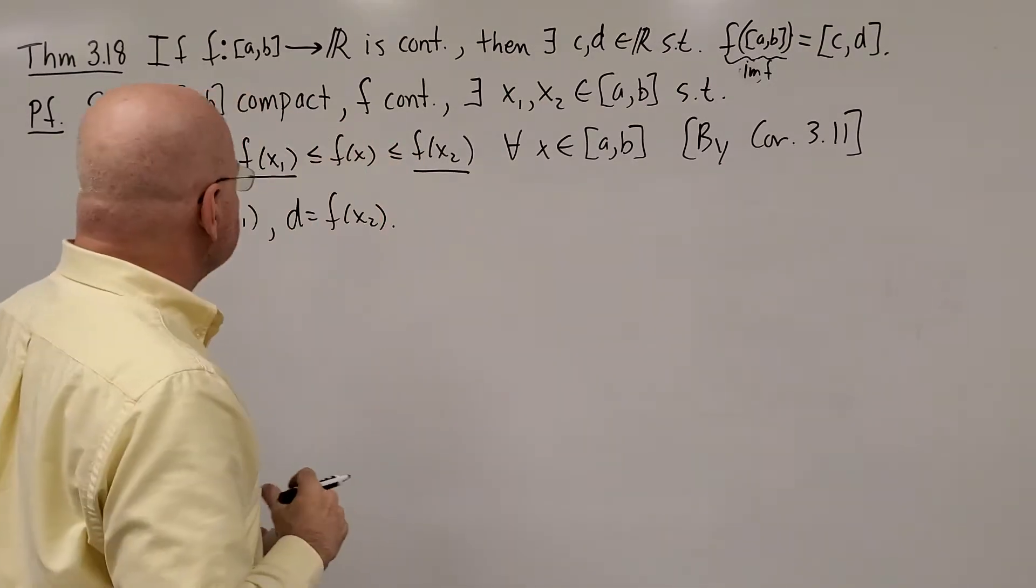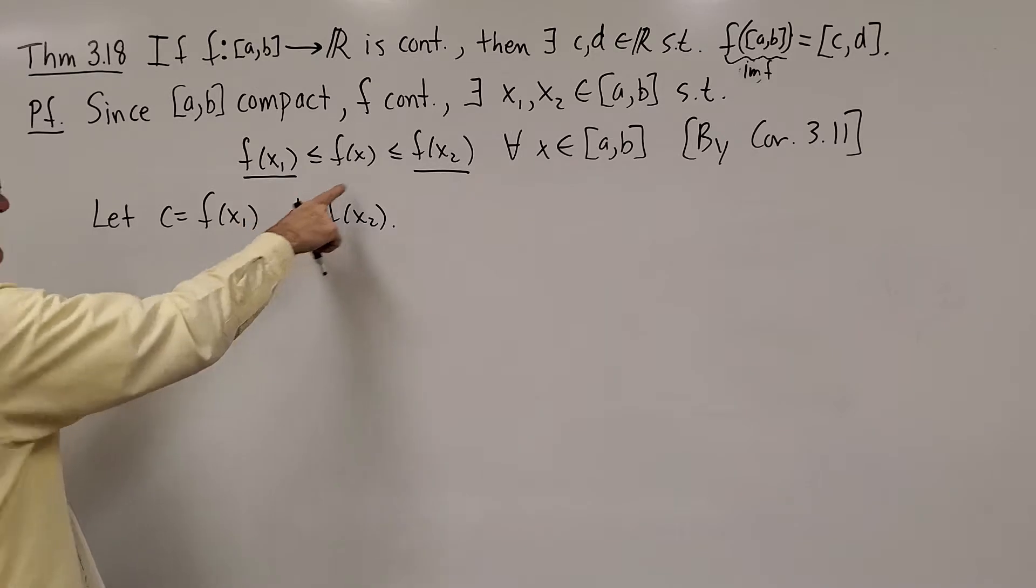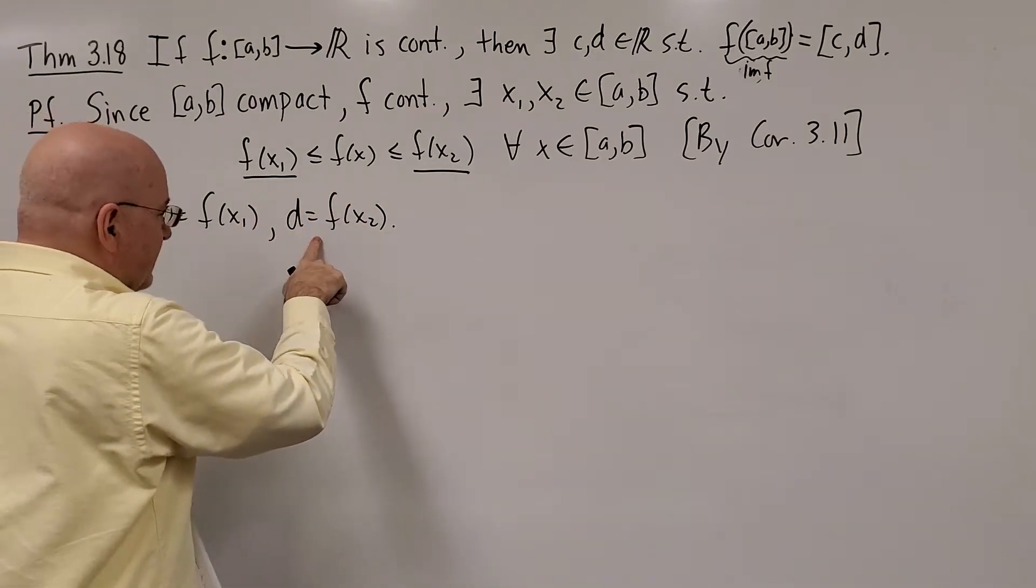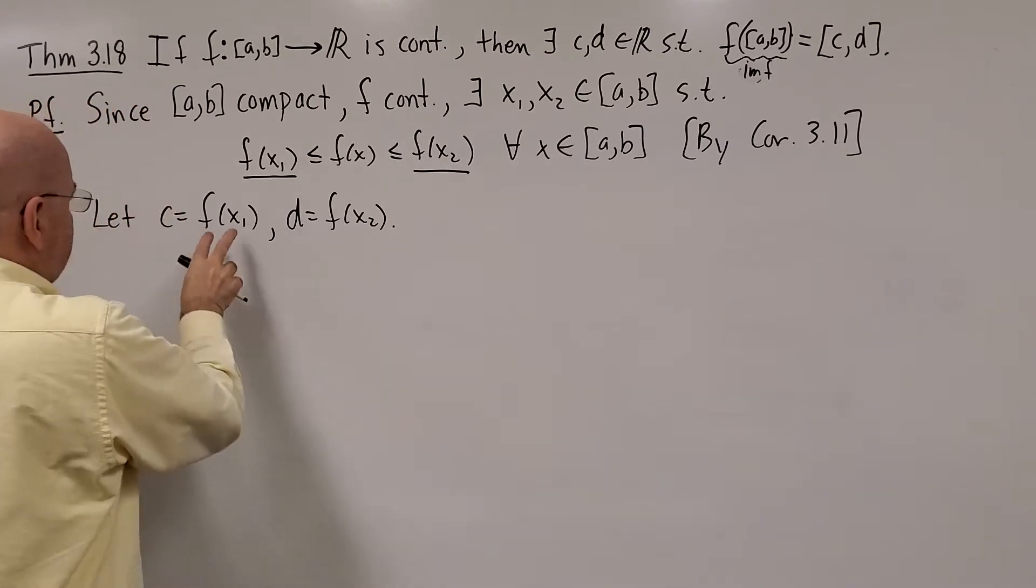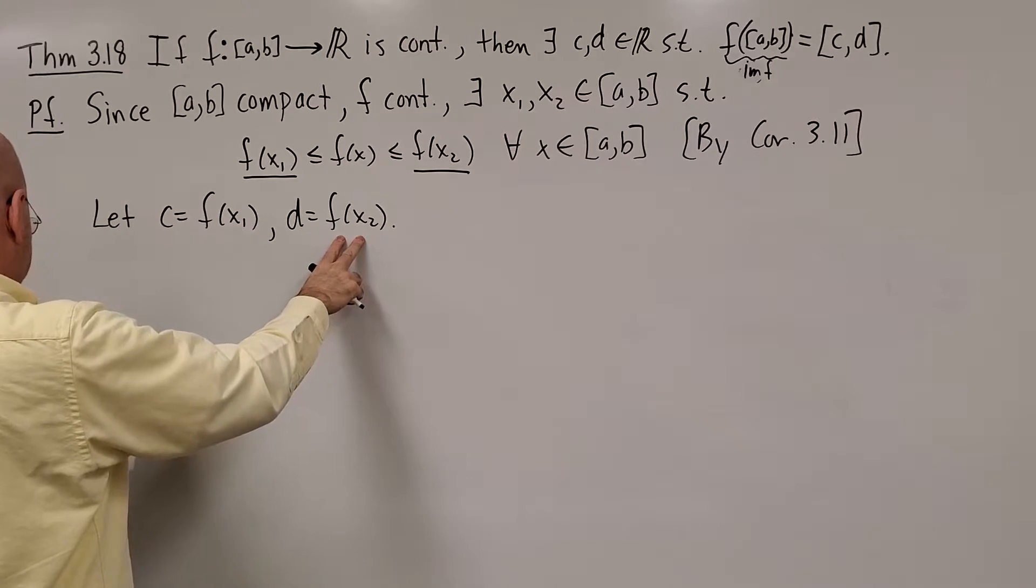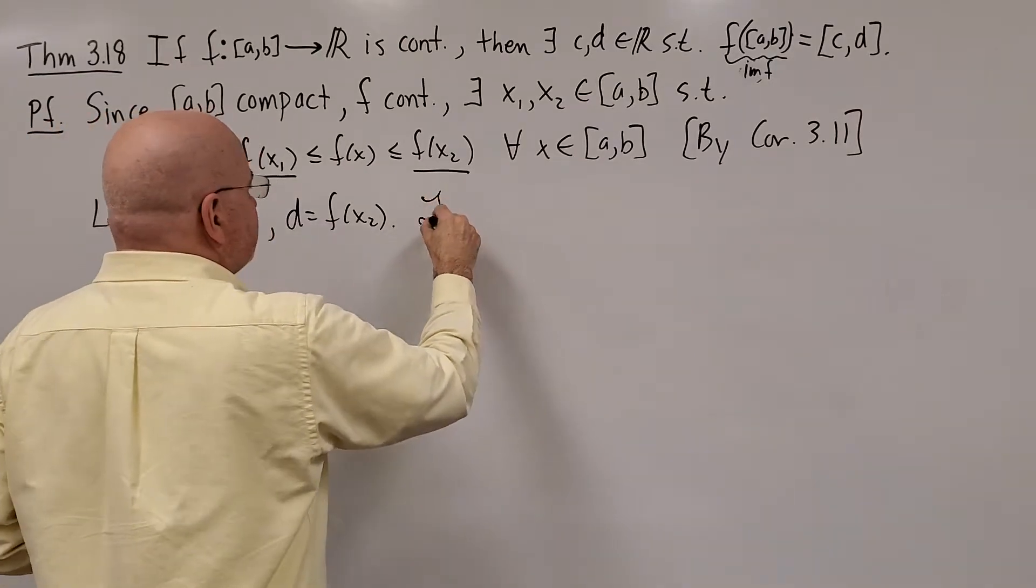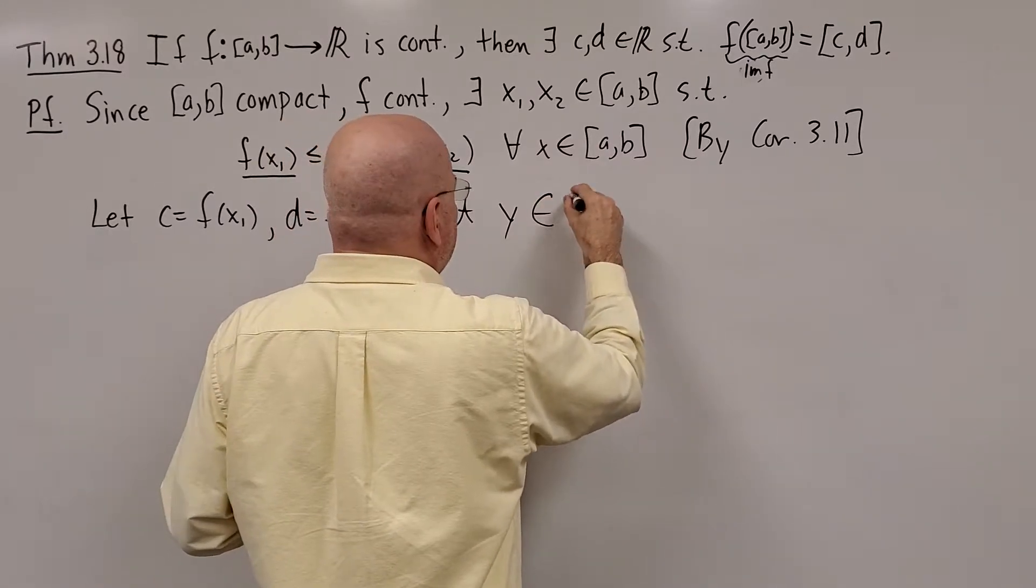Okay, well let's let C be the min value, the height of the function at x1. D will be the height of the function or value of the function at x2.